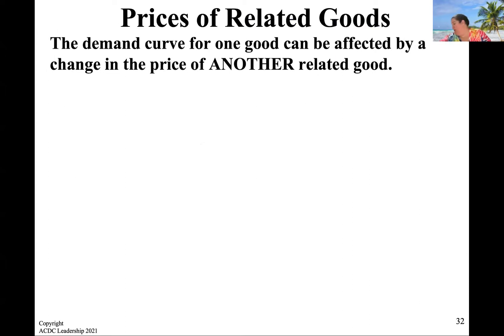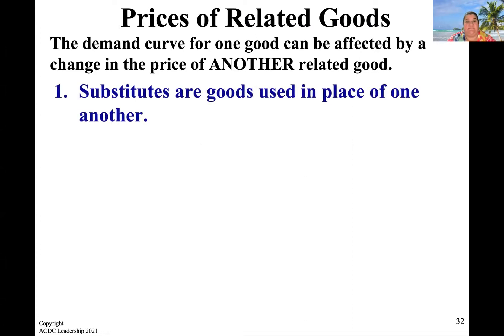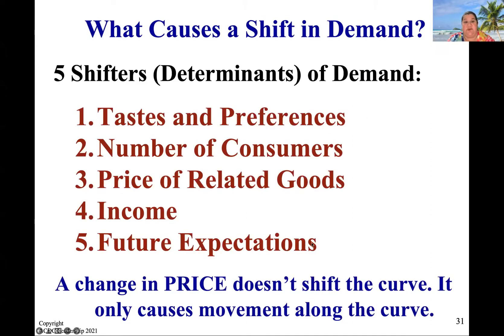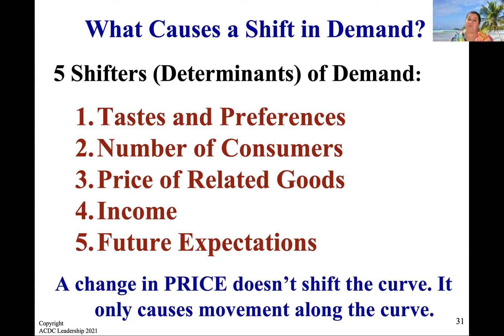Example for taste and preferences: when I was younger, people collected Beanie Babies — oh my God, people lost their mind for Beanie Babies. But that's not really a thing that people do anymore. Or record players — people don't really use record players. Taste and preferences have evolved. We don't use record players anymore, we don't even use CD players anymore. So the demand is going to shift for those products.